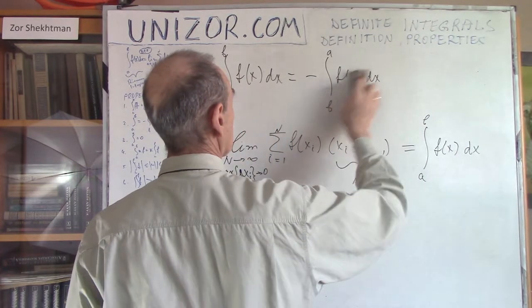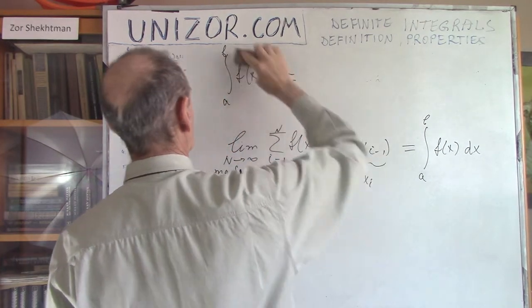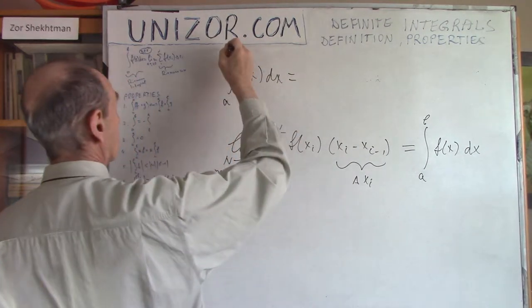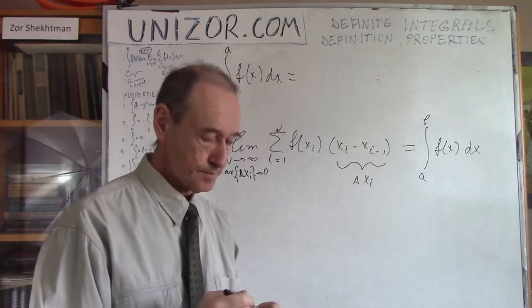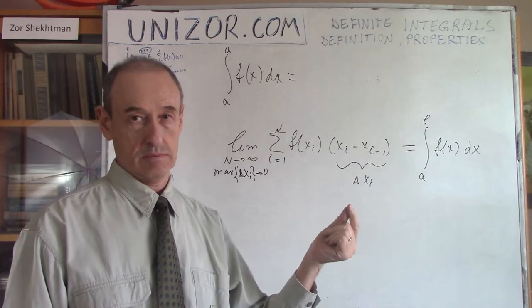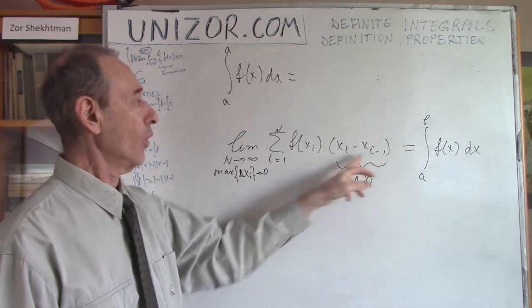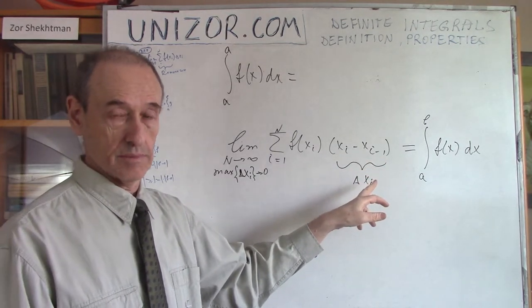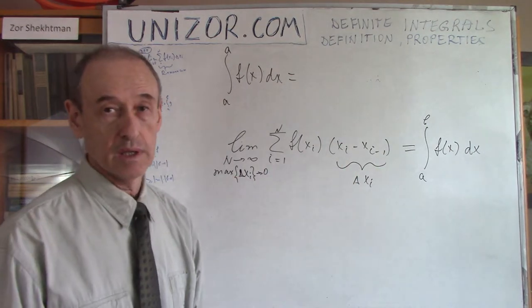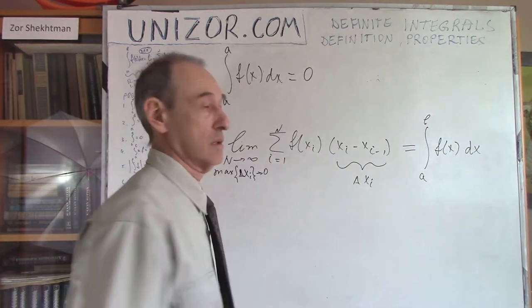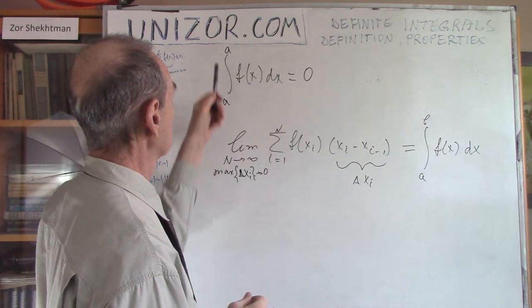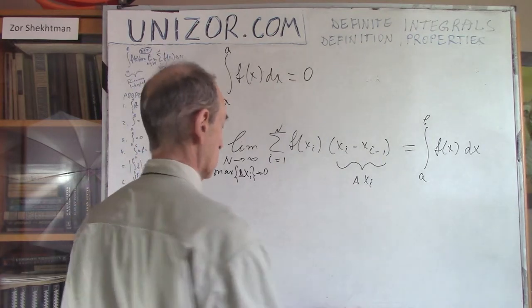Next property: what if you integrate from A to A? That means our segment AB has zero length. Obviously, all Xᵢ's would be equal to each other, so all delta Xᵢ's would be zero. The sum will be equal to zero, and the limit will be equal to zero. So integration from A to A results in zero.